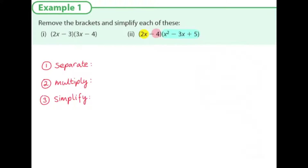We're going to separate, multiply, and simplify. We're going to multiply each term by each of the terms in the second bracket: x squared minus 3x plus 5. Also, minus 4 is going to be multiplied by x squared minus 3x plus 5.